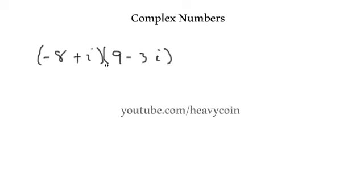So negative 8 times 9 is negative 72. Negative 8 times negative 3i is going to be positive 24i. And then that's plus 9i. And that's going to be negative 3i squared.